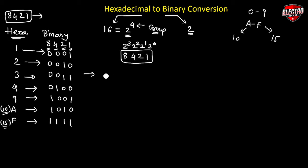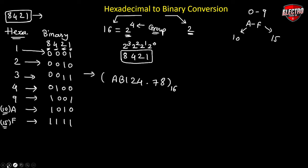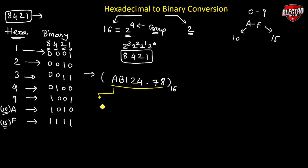Let's take one example. We have the hexadecimal number AB124.78 and we want to convert this into binary number system. The first step is to convert each digit of the hexadecimal number individually into binary using the 8-4-2-1 code.